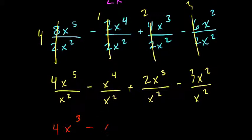minus x to the 4th over x squared is x squared, plus 2x to the 1st minus 3. x squared over x squared is x to the 0 or just 1, and that's our answer here.